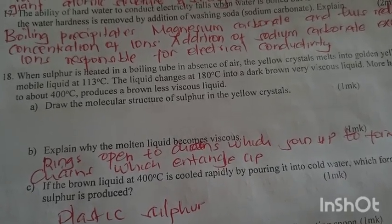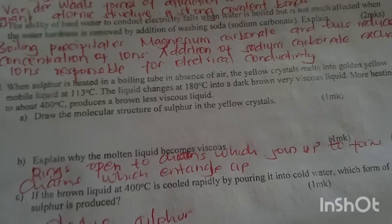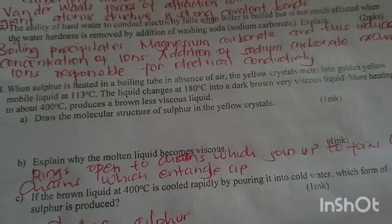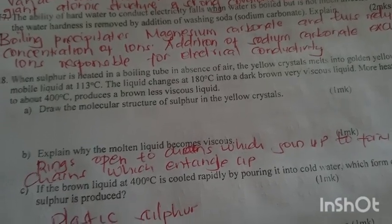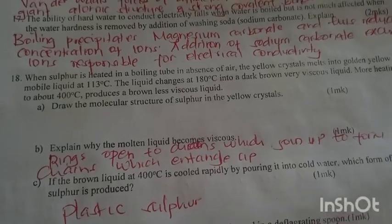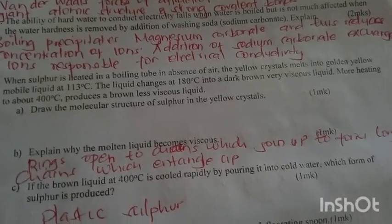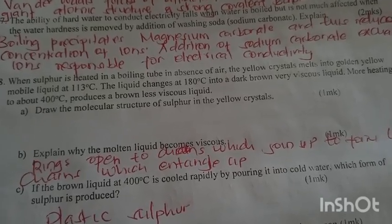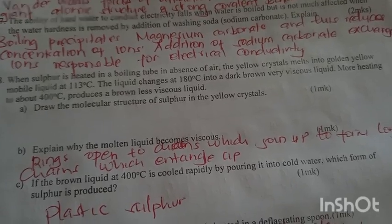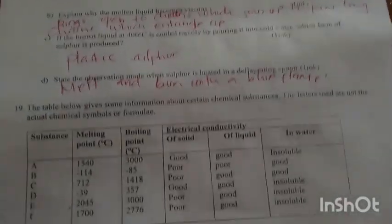The ability of hard water to conduct electricity falls when the water is boiled but is not much affected when water hardness is removed by addition of washing soda. Explain. When you boil, it precipitates the magnesium carbonate and thus reduces the concentration of ions. When you add sodium carbonate, exchange of ions responsible for electrical conductivity takes place.